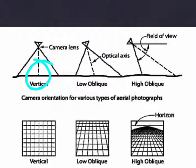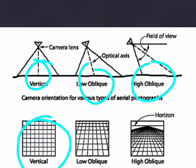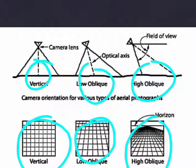An oblique photograph is an aerial photograph taken with the camera axis intentionally tilted from the vertical. Oblique photographs can be used to determine different heights. Low oblique photographs are those in which the horizon is not seen; the camera is tilted to 30 degrees. High oblique photographs are those in which the horizon is seen; the camera is tilted up to 60 degrees. In the diagram: vertical — camera perpendicular to the ground; low oblique — 30 degree intentional tilt; high oblique — 60 degree intentional tilt.